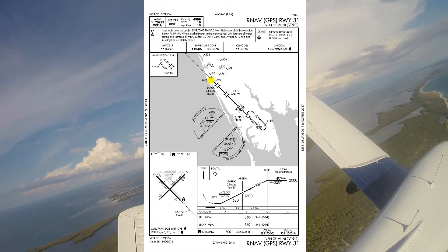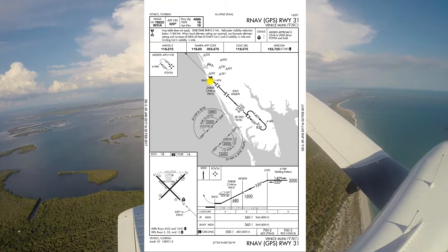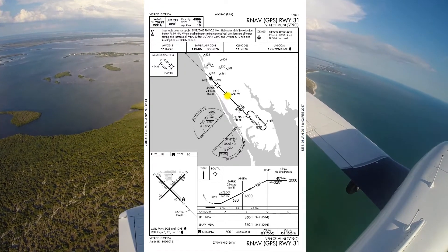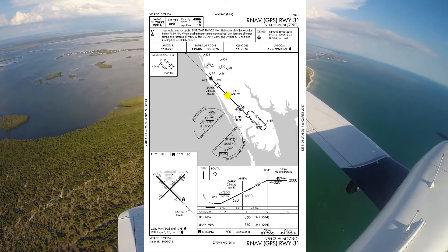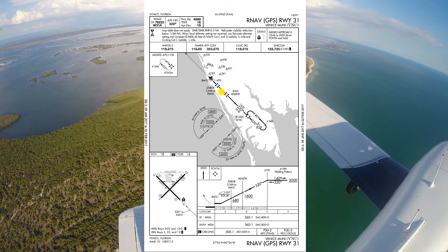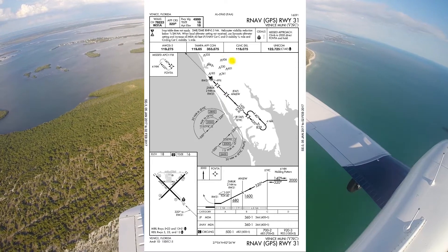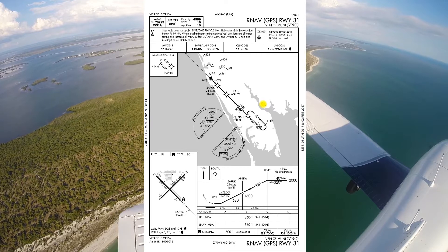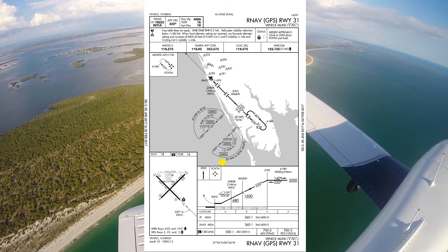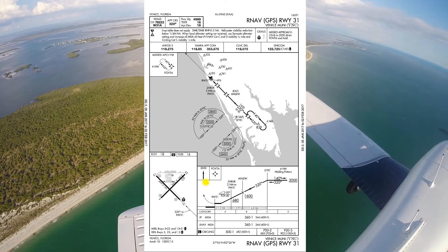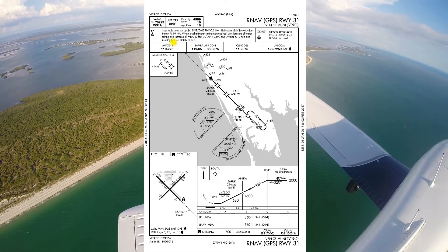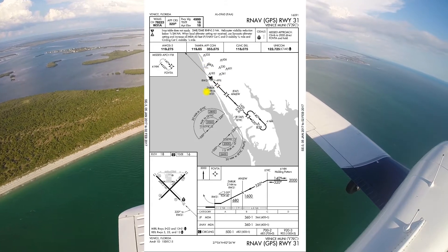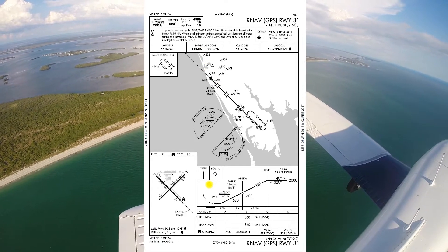After you brief your traffic pattern entry, you're going to want to go ahead and brief what's going to happen if you have to go missed. I know the weather's great and you're probably not going to have to go missed for weather, but what if somebody pulls out in front of you? What if there's a coyote on the runway and you have to go around? Have a game plan. Stick with the game plan that this plate gave you — it's designed to keep you safe, designed to keep you from hitting anything when you can't see, so better to follow it even when you can see. So let's go straight ahead 2,000 feet and direct Favta, and then maybe come back around and try the approach again. We don't have to go all the way to Favta, but let's just go straight ahead to 2,000 feet — that should keep us safe.